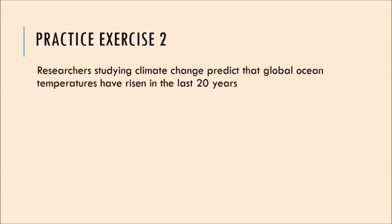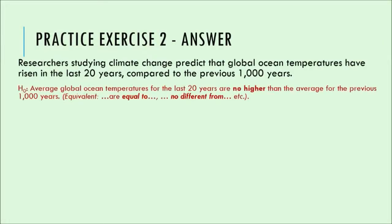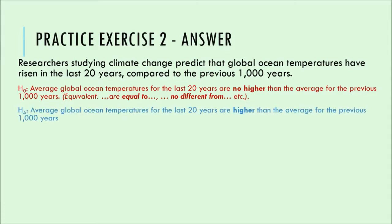Here's another one. Researchers studying climate change predict that global ocean temperatures have risen in the past 20 years. The null hypothesis might be that average temperatures are no higher — equal to, or no different from — the previous 1,000 years. And the alternative would be that they are higher. This is about the actual temperature value itself, high versus low, and the prediction is that they have risen on average.